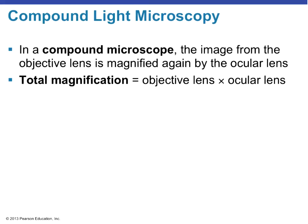In a compound microscope, the image is shown via two lenses: the eyepieces or ocular lenses, and the objective lens. To find total magnification, we multiply the ocular lens — usually 10x — by whatever objective lens we're using. So if we're under oil immersion, which is 100x magnification, and we multiply that by 10, we get 1000x total magnification.